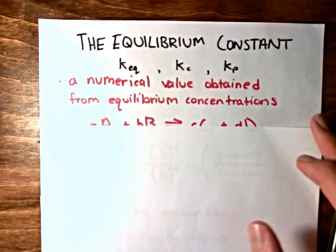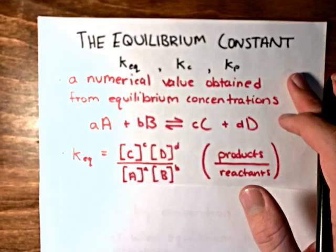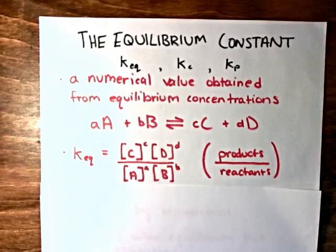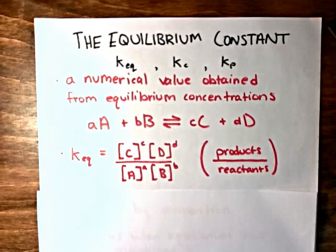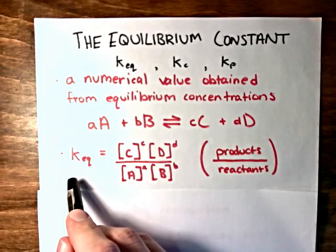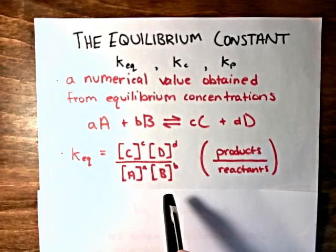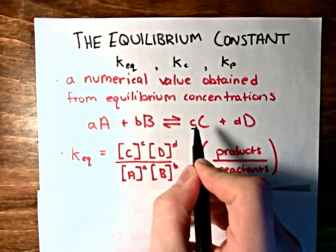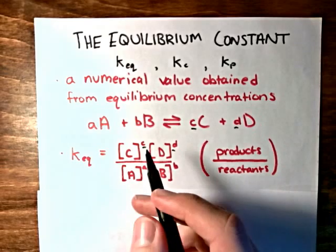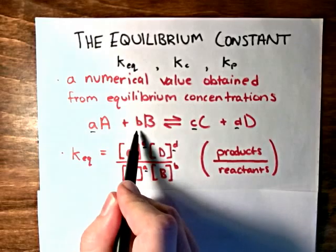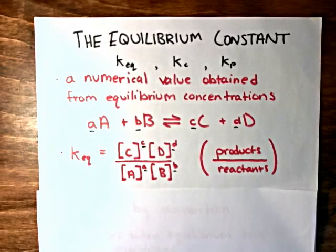It's calculated with something called the equilibrium expression. An equilibrium expression can be determined without any numerical information — just by looking at a chemical reaction, we can determine it. The equilibrium expression says that the equilibrium constant is equal to the concentration of each of the products raised to their respective coefficients, divided by the concentration of each of the reactants raised to their respective coefficients.